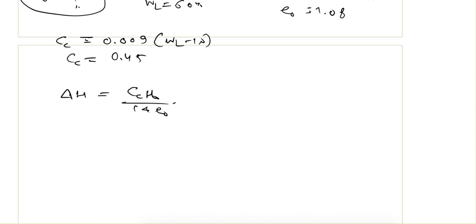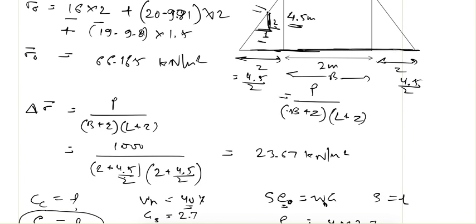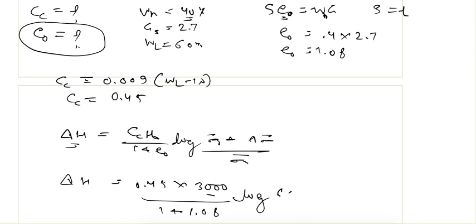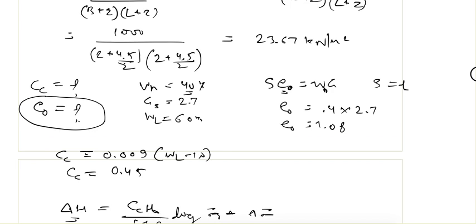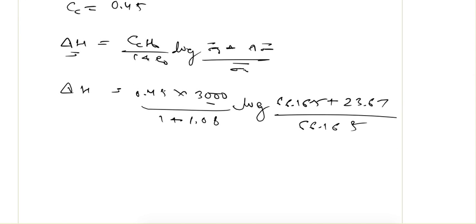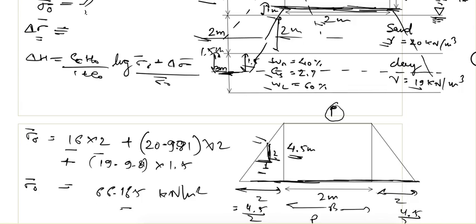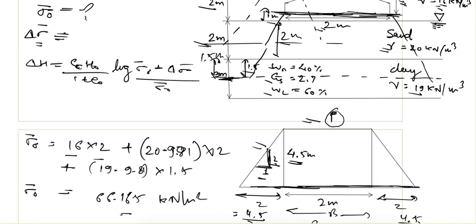Applying the formula: delta H = CC × H0 / (1 + E0) × log((sigma naught + delta sigma) / sigma naught). Substituting: CC = 0.45, H0 = 3000 mm, E0 = 1.08, sigma naught = 66.165 kN/m², delta sigma = 23.67 kN/m². This gives delta H = 86.20 mm. The key concept in this problem is load dispersion; the rest is calculation of effective stress and increase in effective stress.